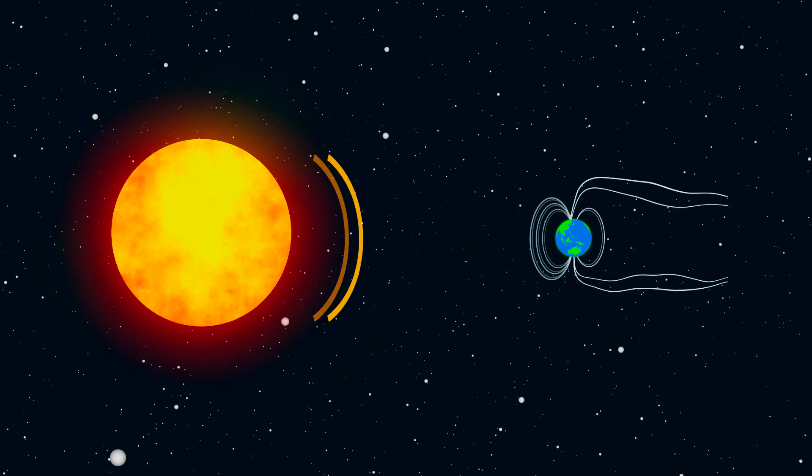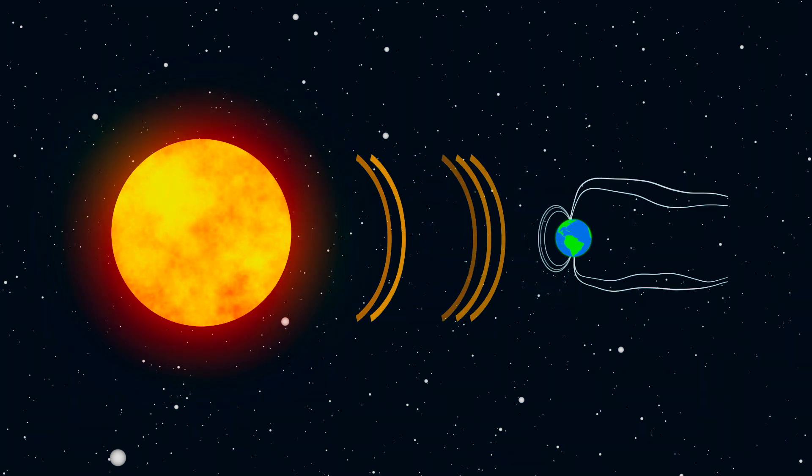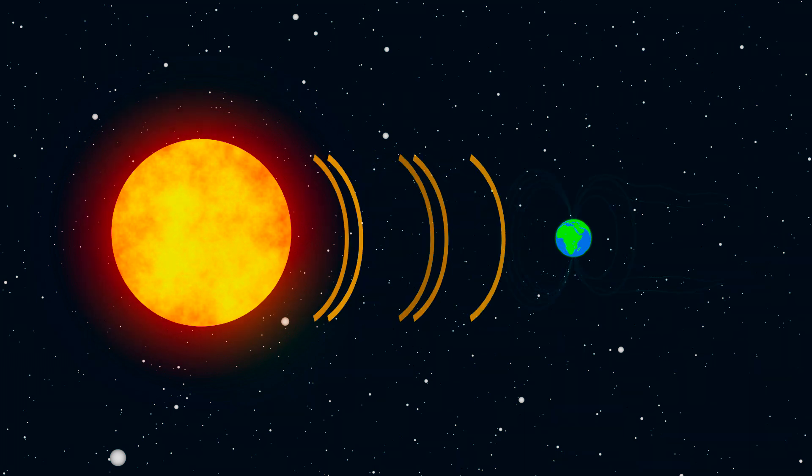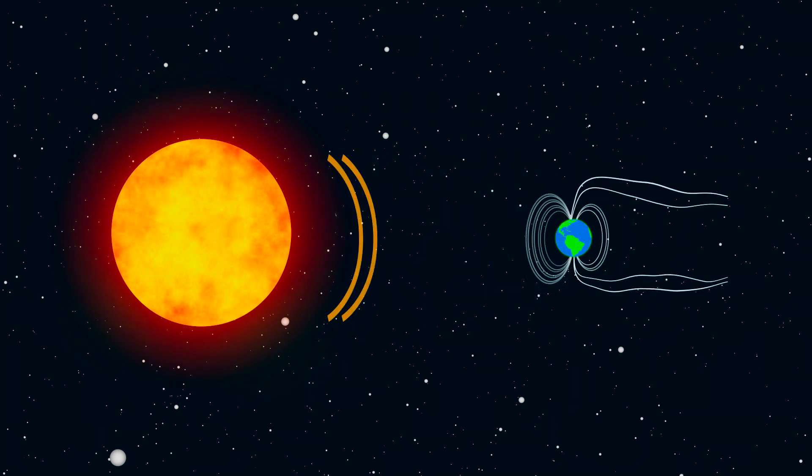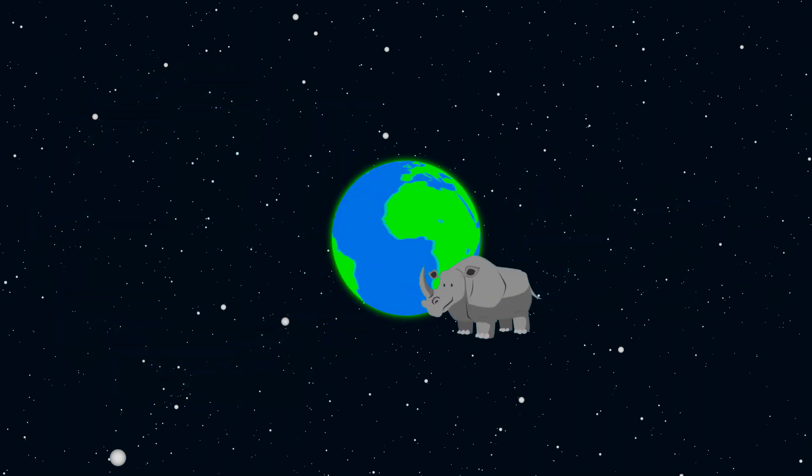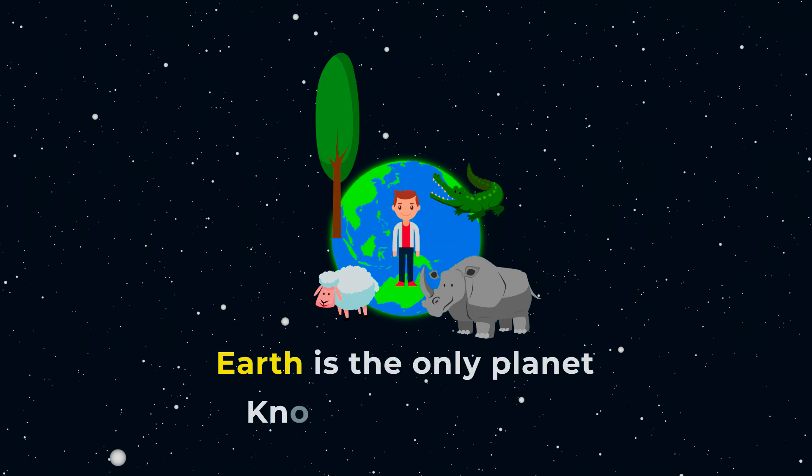Imagine what if the core is solid. It indeed will put an end to the Earth's magnetic field. The Earth's magnetic field protects life on the Earth's surface from harmful particles coming from the Sun. It keeps the animals and plants safe within the planet's atmosphere. No wonder, Earth is the only planet known to have life.